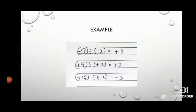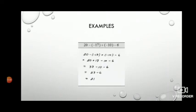Example: minus 9 divided by minus 3 — 9 divided by 3 is 3, and both are negative, same sign, so result is positive 3. Plus 9 divided by plus 3 — 9 divided by 3 is 3, both are positive, so result is plus 3. Plus 12 divided by minus 4 — 12 divided by 4 is 3, one is positive and one is negative, so the answer gets a negative sign: minus 3.